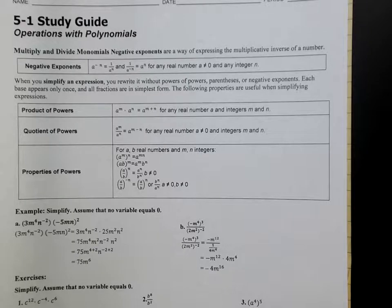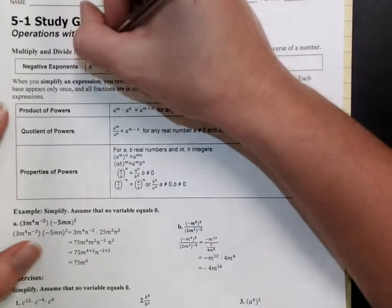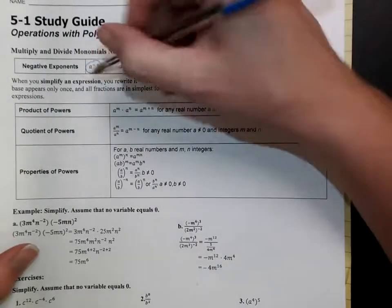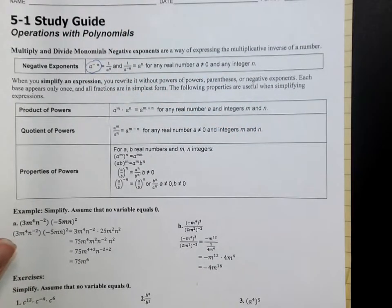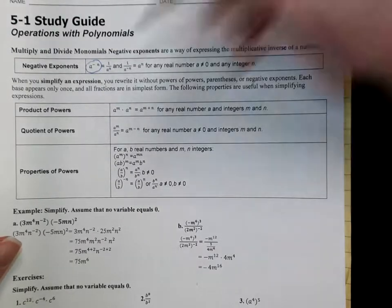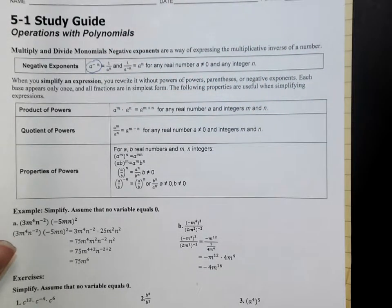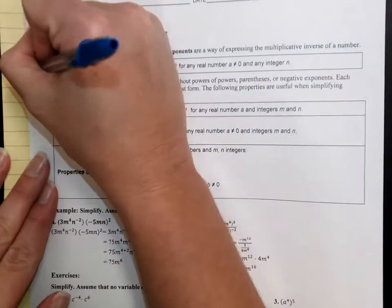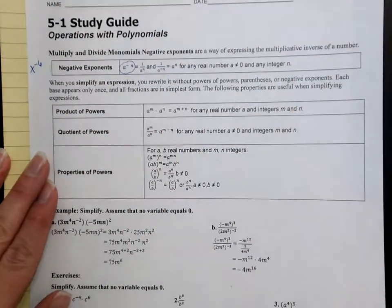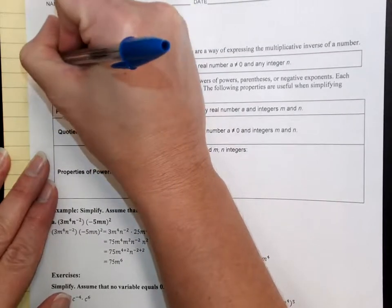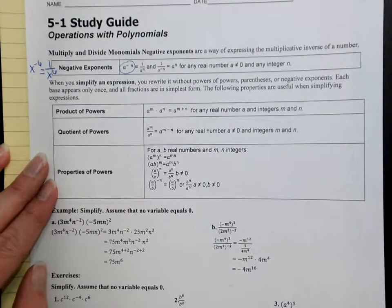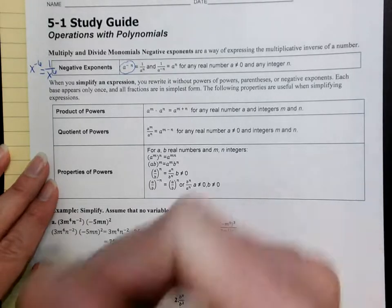The first one is the negative rules, and we've even reviewed these already some this year. So when you have something to a negative exponent, remember that actually equals 1 over that thing. Same thing if you have a negative exponent in the bottom — it really means it should be on the top. For example, if I have x to the negative 6, that really means that I should have 1 over x to the 6th power.